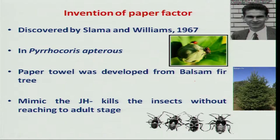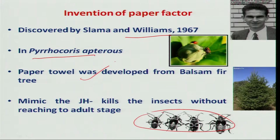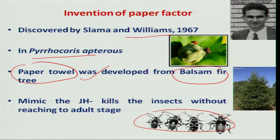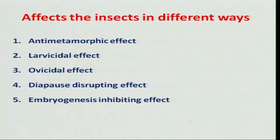This phenomenon was actually discovered accidentally. When Dr. William was rearing the pyrochorus bug, he came across mortality of the bug. He later understood that a particular chemical was involved. He traced it to a paper towel made from balsam fir tree, available in America, which contains this JH hormone. That killed the insects, and thereby different insect growth regulators and other juvenoids came into the market.